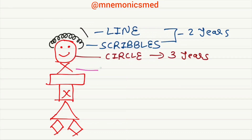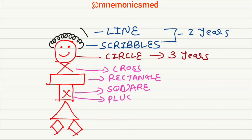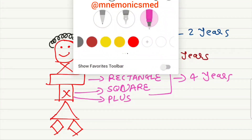Children copy a cross, rectangle, and square at the age of four years. So you have to remember these four things — cross, rectangle, square, and plus — at the age of four years.